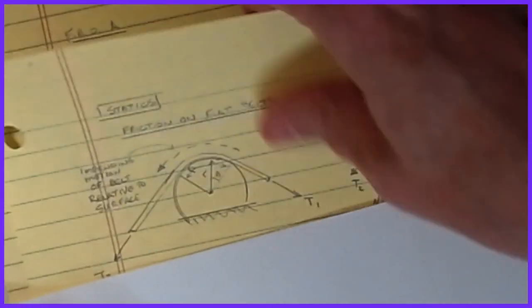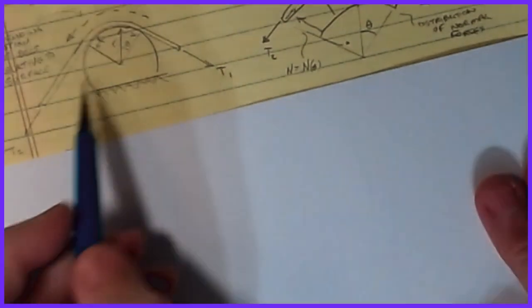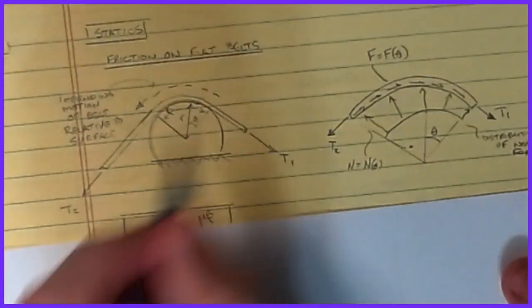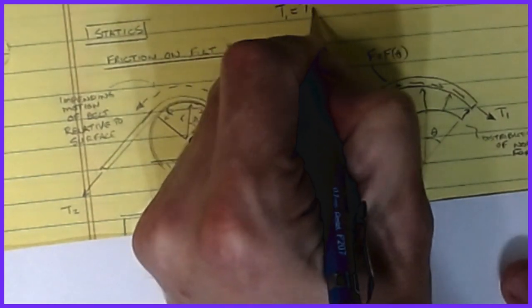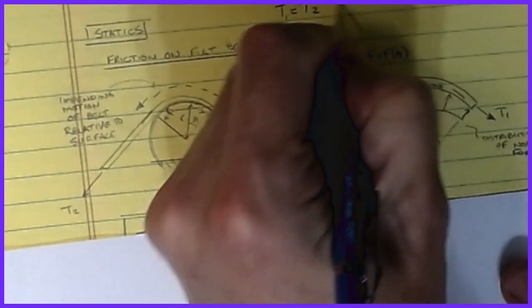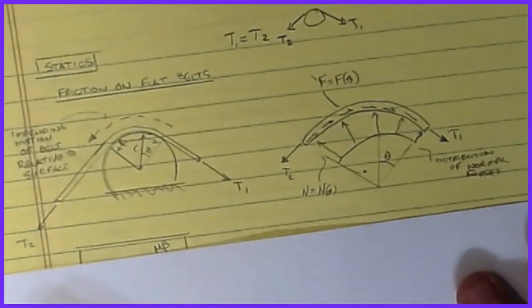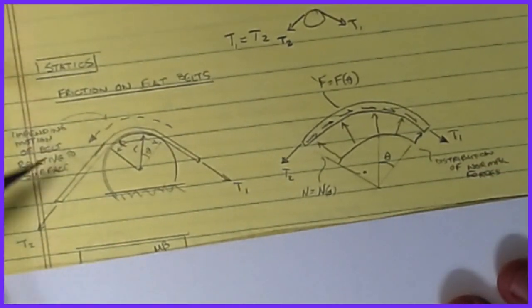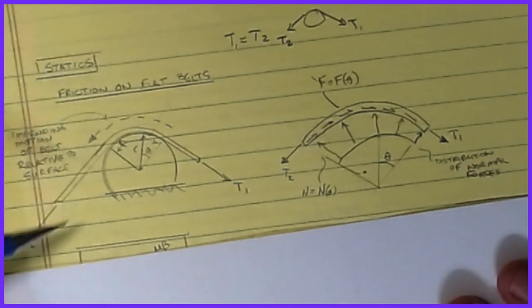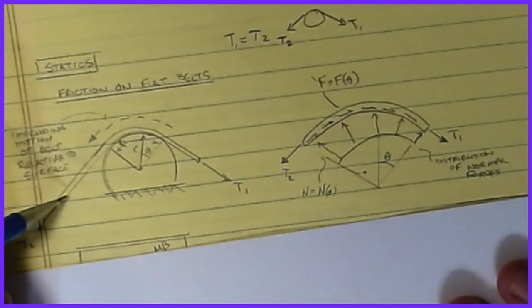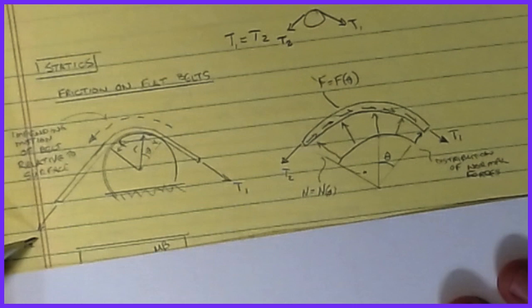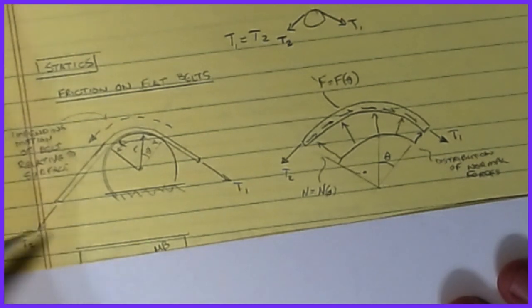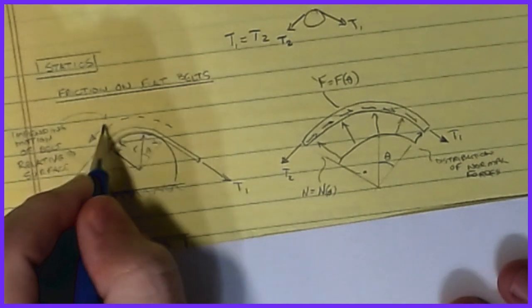The next topic is friction applied to flat belts or pulley surfaces. Earlier we said T1 always equals T2 for frictionless pulleys, but friction exists in reality. We take a belt or rope going over a surface, define T2 as the larger tension and T1 as the smaller, with T2 greater than T1. The impending motion of the belt is to slide over the surface.